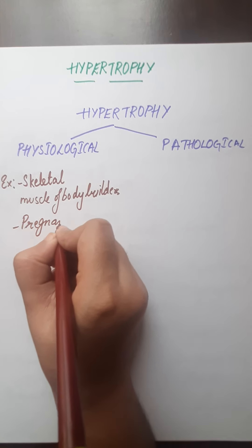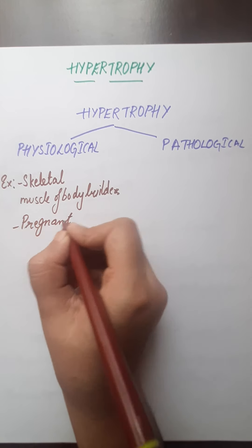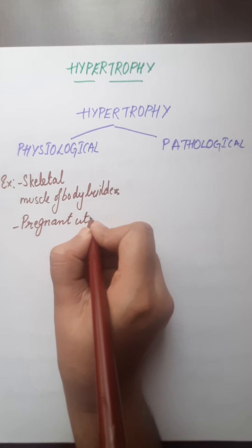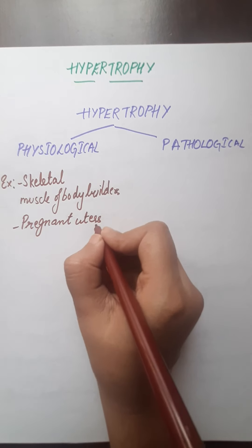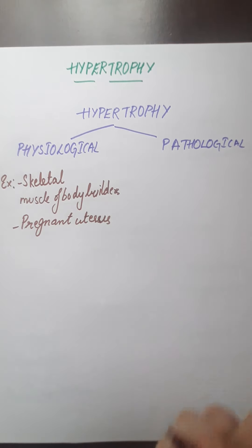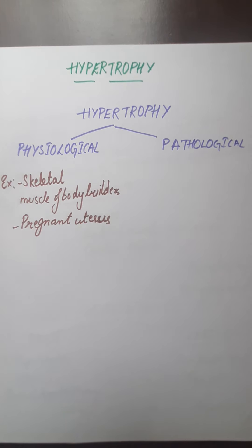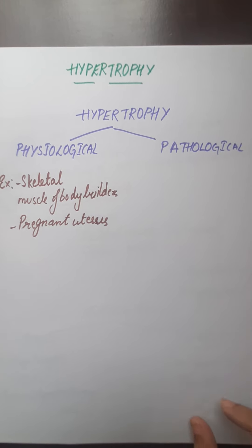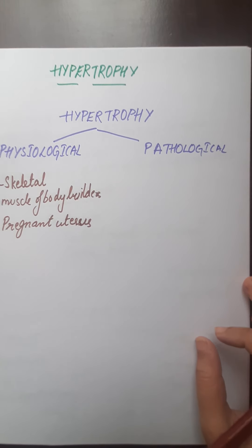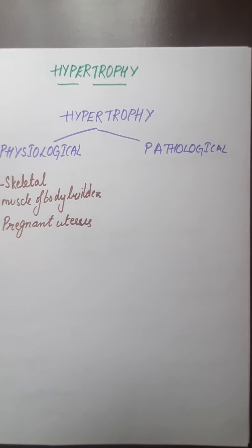The second example of physiological hypertrophy is the pregnant uterus. In the pregnant uterus, both hypertrophy as well as hyperplasia takes place — there will be increase in the size of cells as well as increase in the number of cells.